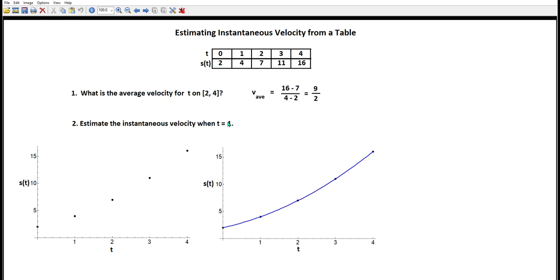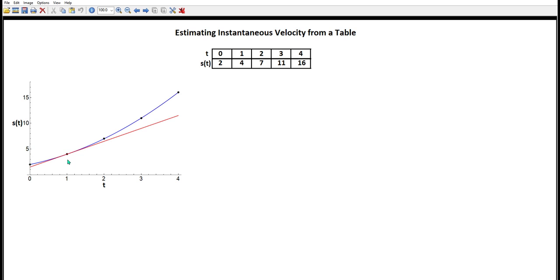And we want the tangent when t equals 1, which is the instantaneous velocity. It's the slope of this tangent line that we're looking for. And that's the instantaneous velocity.